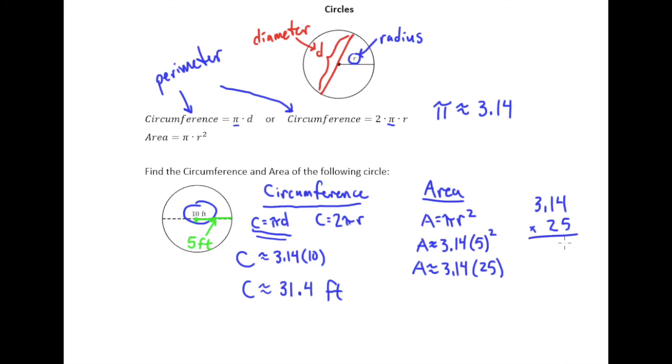So 5 times 4 is 20. 5 times 1 plus 2 is 7. 5 times 3 is 15. We'll bring 0 down. 2 times 4 is 8. 2 times 1 is 2. 2 times 3 is 6.